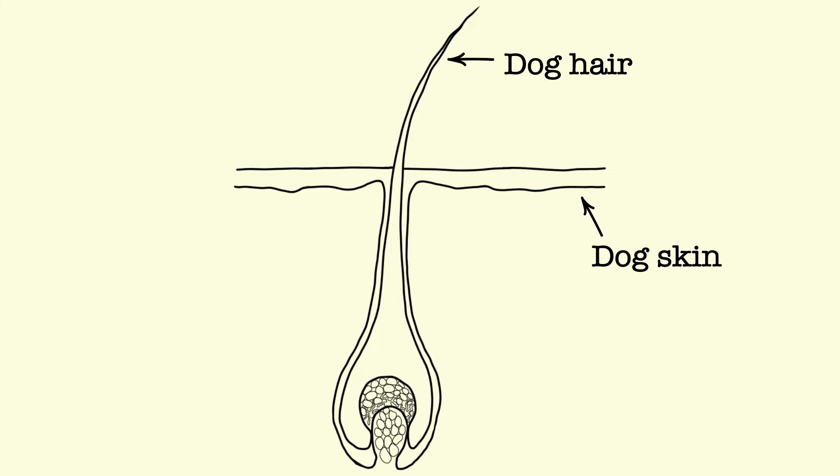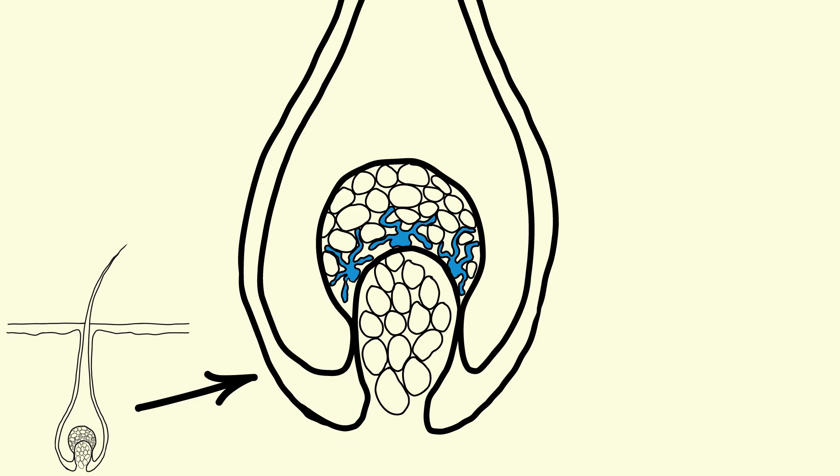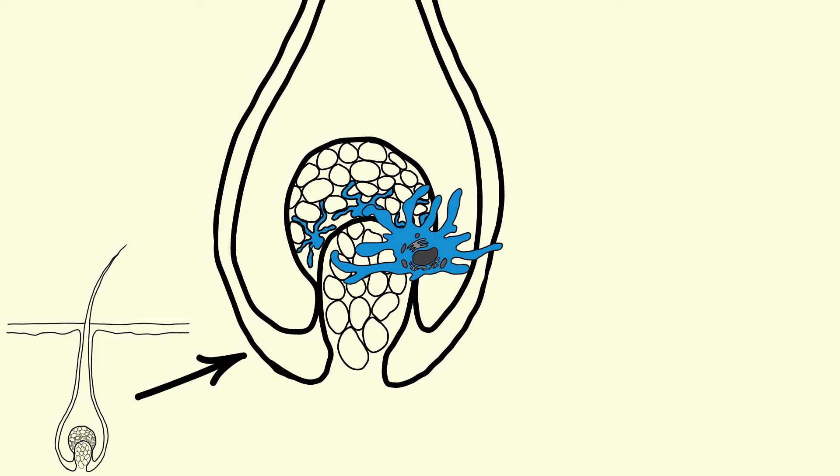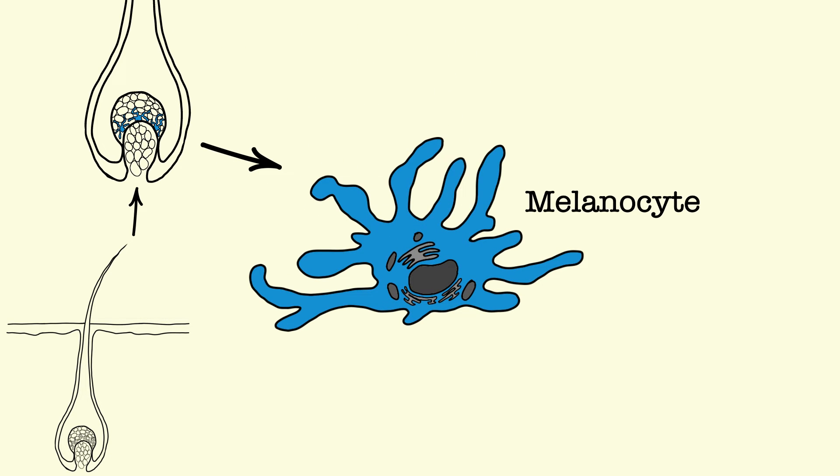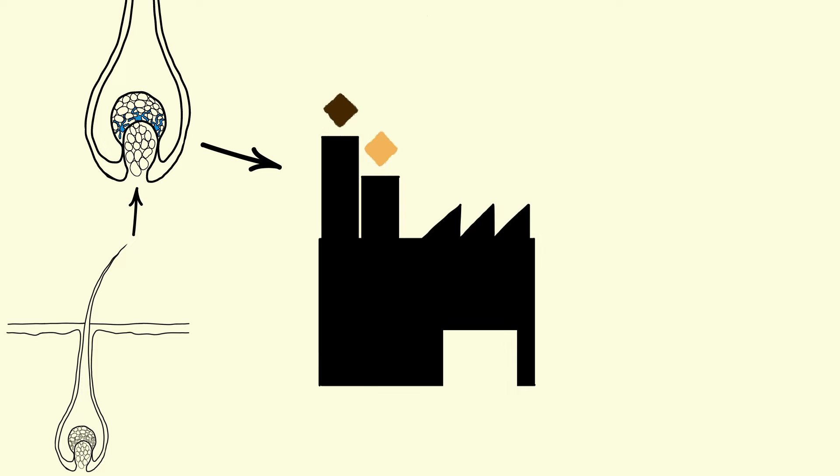Let's now take a look at a dog hair to see how this coloration takes place. At the base of each hair are cells called melanocytes. These cells are like pigment factories and can pump out either eumelanin or pheomelanin, coloring the hairs located above them.